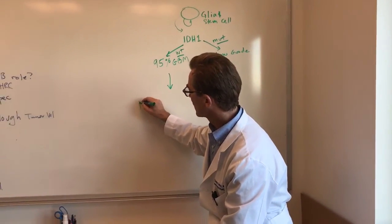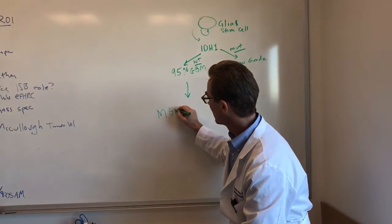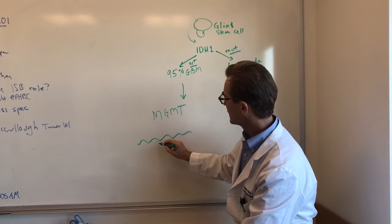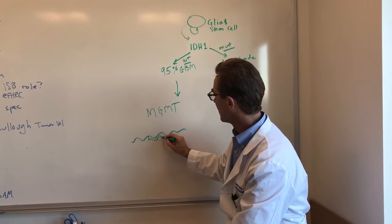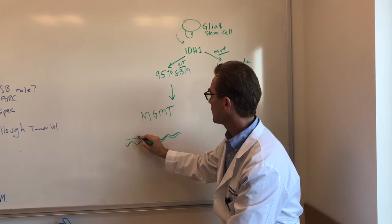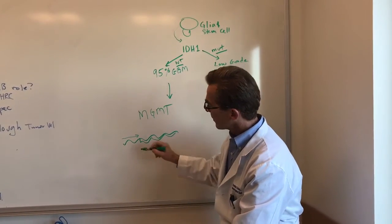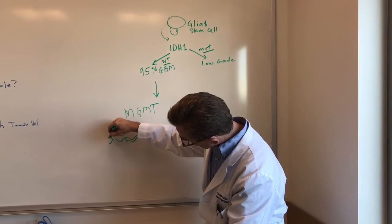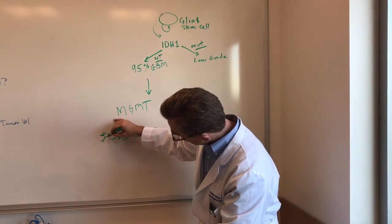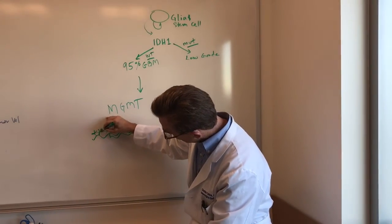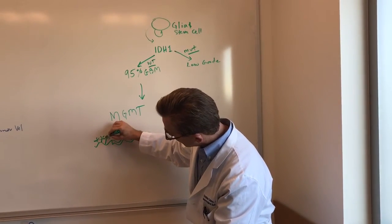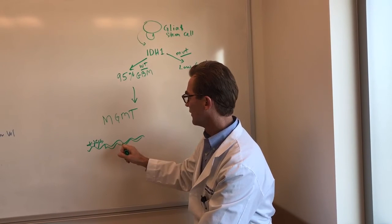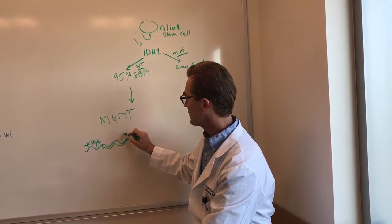So there's a gene called MGMT, and if you look at DNA, let's say this is your DNA, strand of DNA, this may be the gene, and this is something called the promoter, which drives the gene. And there's certain things that can happen to this promoter region, which is where a carbon with three hydrogens can come and get stuck on here.